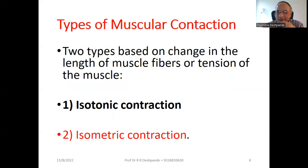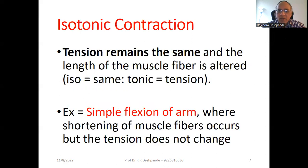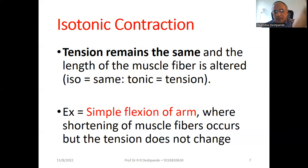Two types of contraction are based on change in the length or tension of the muscle. Isotonic contraction: tone remains the same, the length of the muscle fiber is changed. A simple example is flexion of the arm — this is isotonic contraction. Shortening of the muscle fiber occurs, but the tension does not change. So, simple flexion of the arm is an example of isotonic contraction.